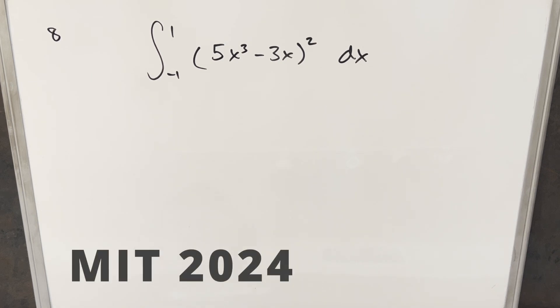Okay, we have here today another integral from the MIT Integration B2024. This was problem 8. We have the integral from minus 1 to 1 of 5x cubed minus 3x all squared dx.